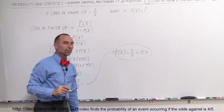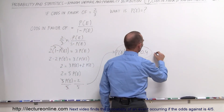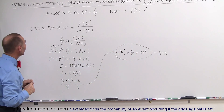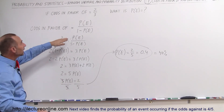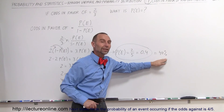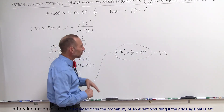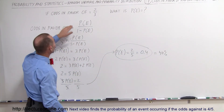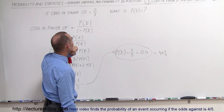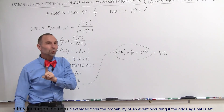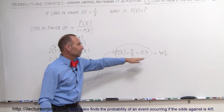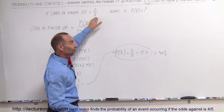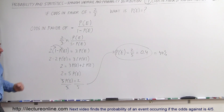So the probability of the event occurring is 0.4, or 40%. If the odds in favor of winning is two-thirds, there's a 40% chance you'll win and a 60% chance you won't. Remember: if the odds in favor are less than one, the odds are against you. Two-thirds may sound good, but it only reflects a 40% probability of winning and a 60% probability of losing.